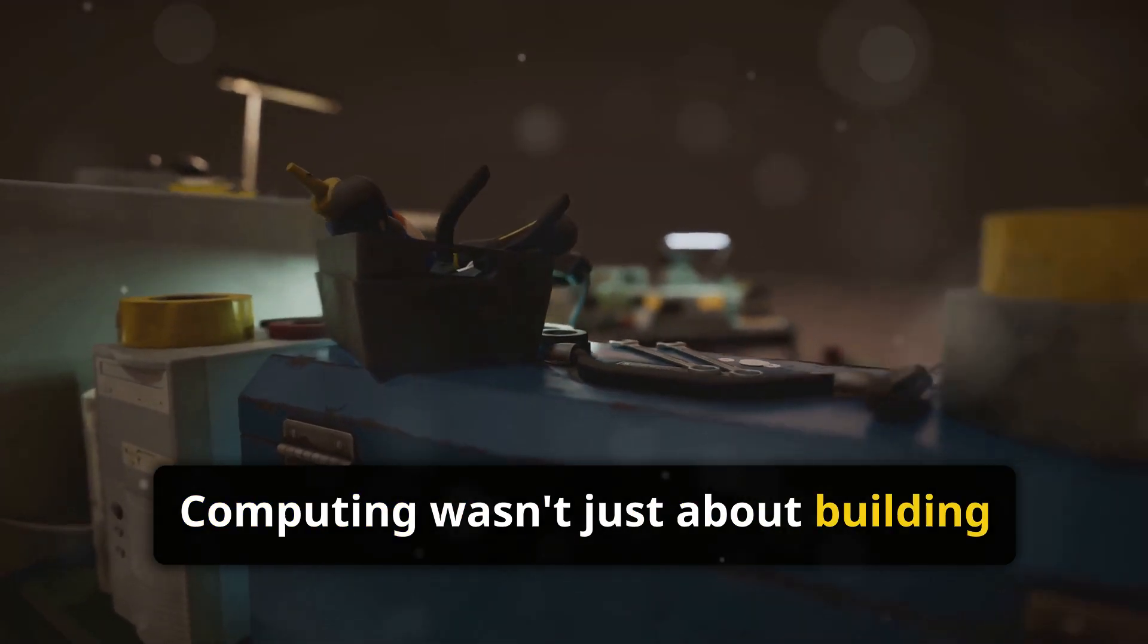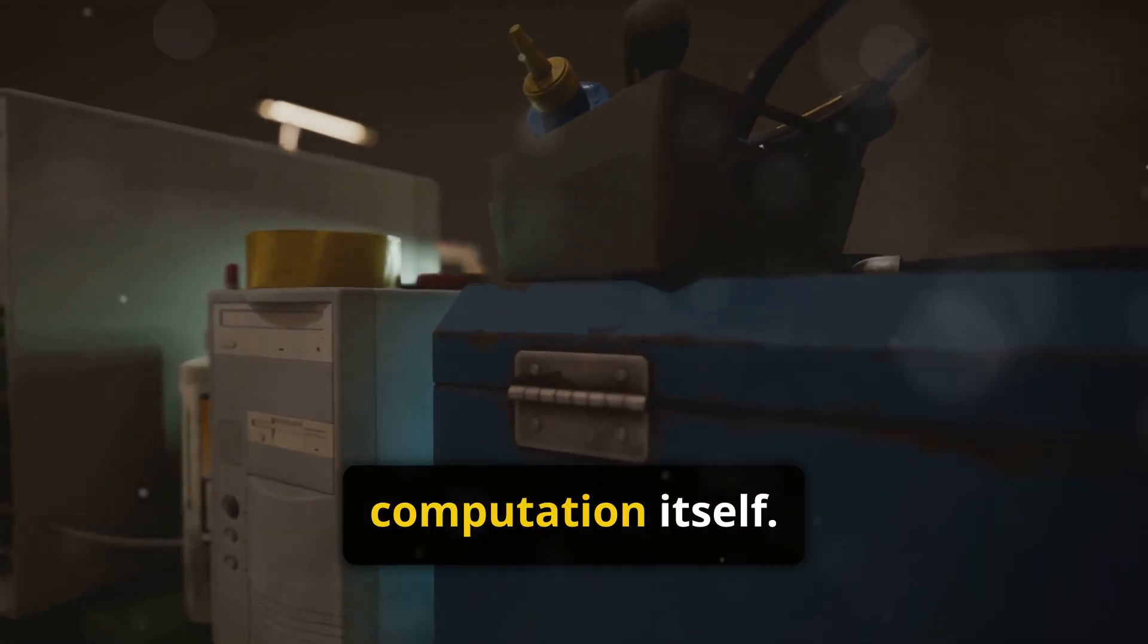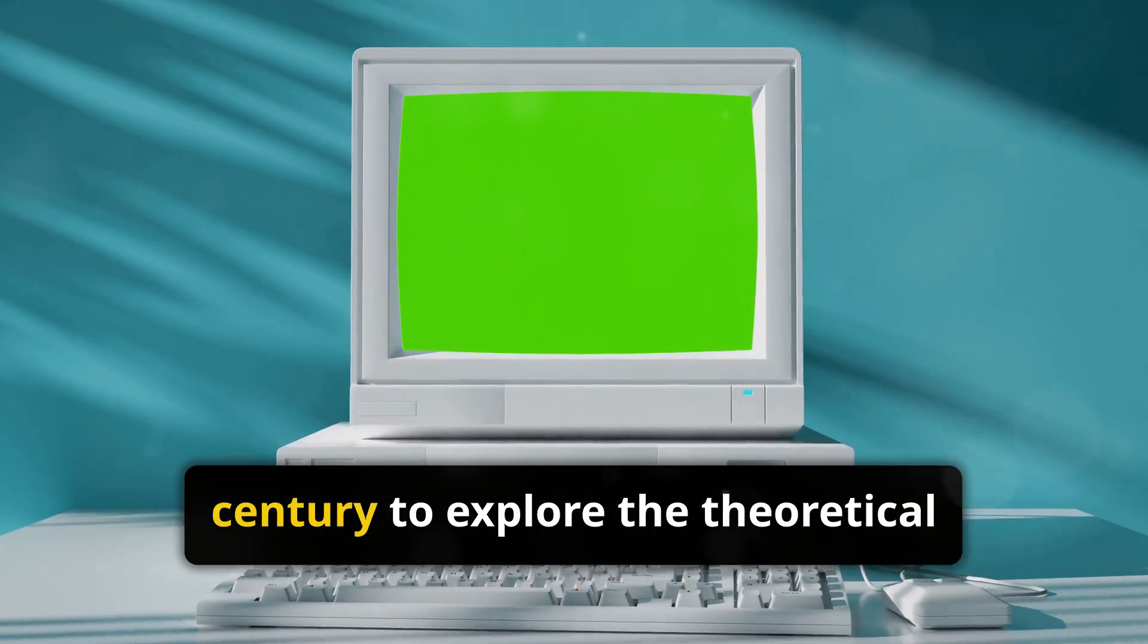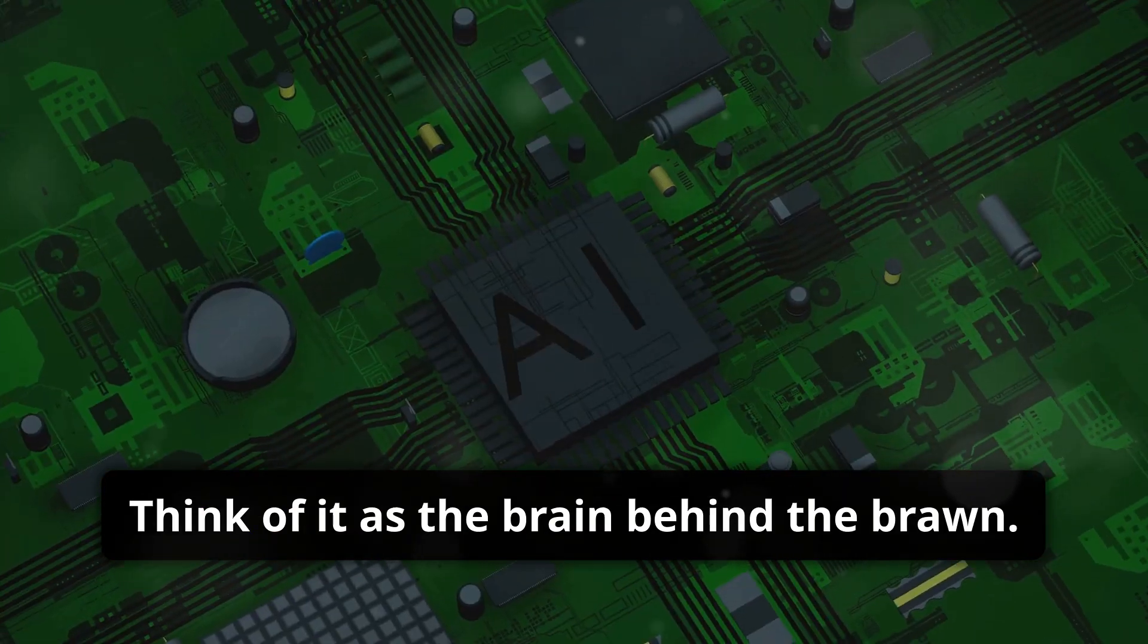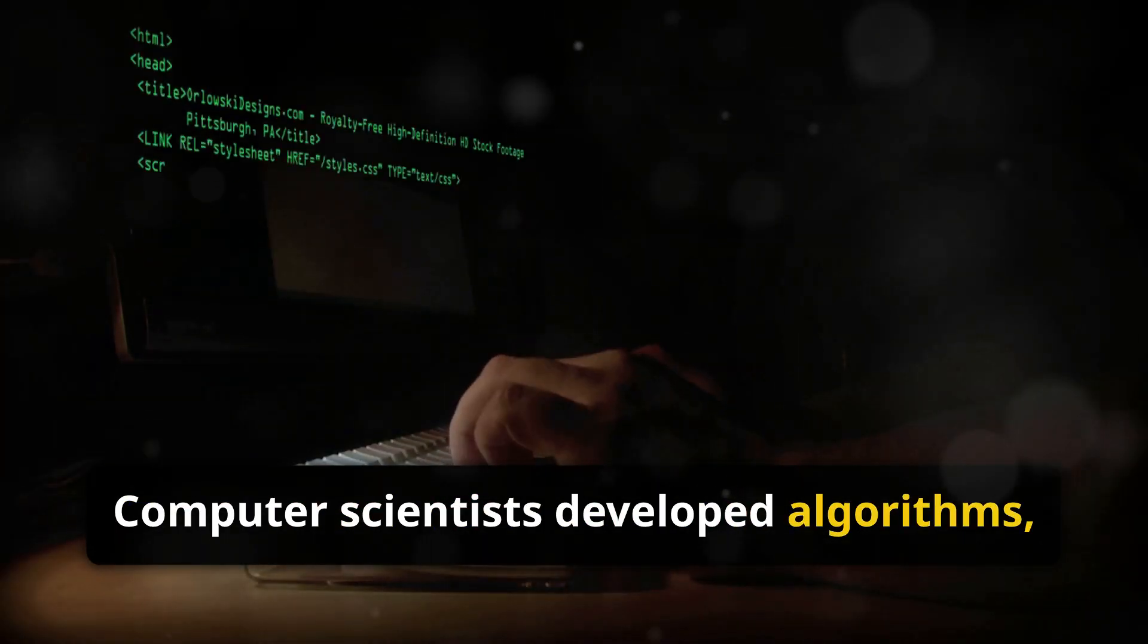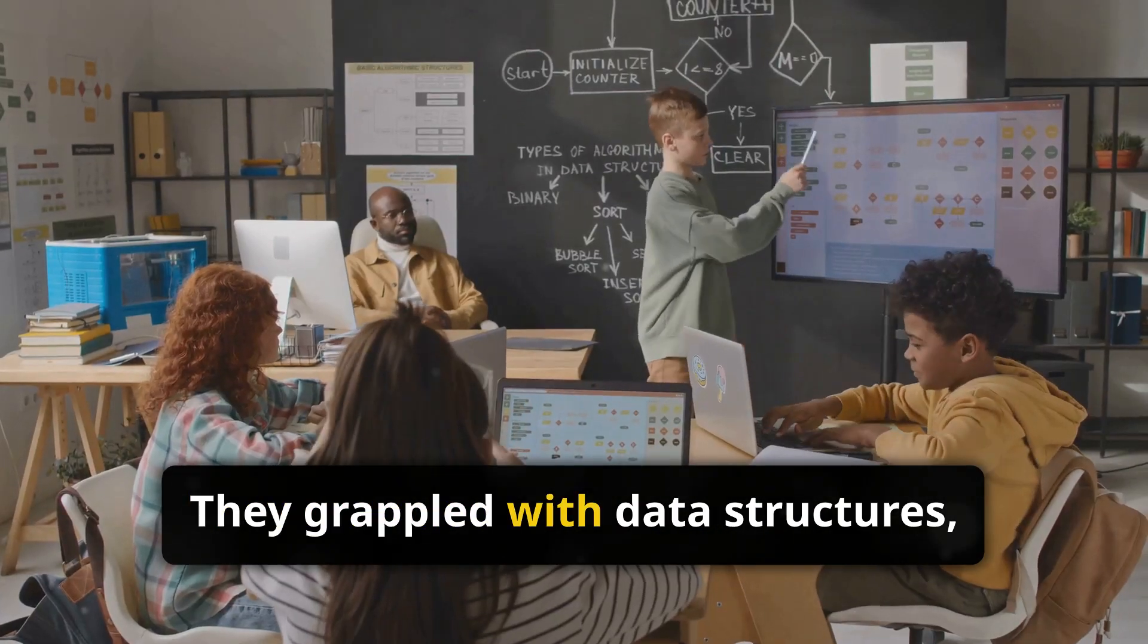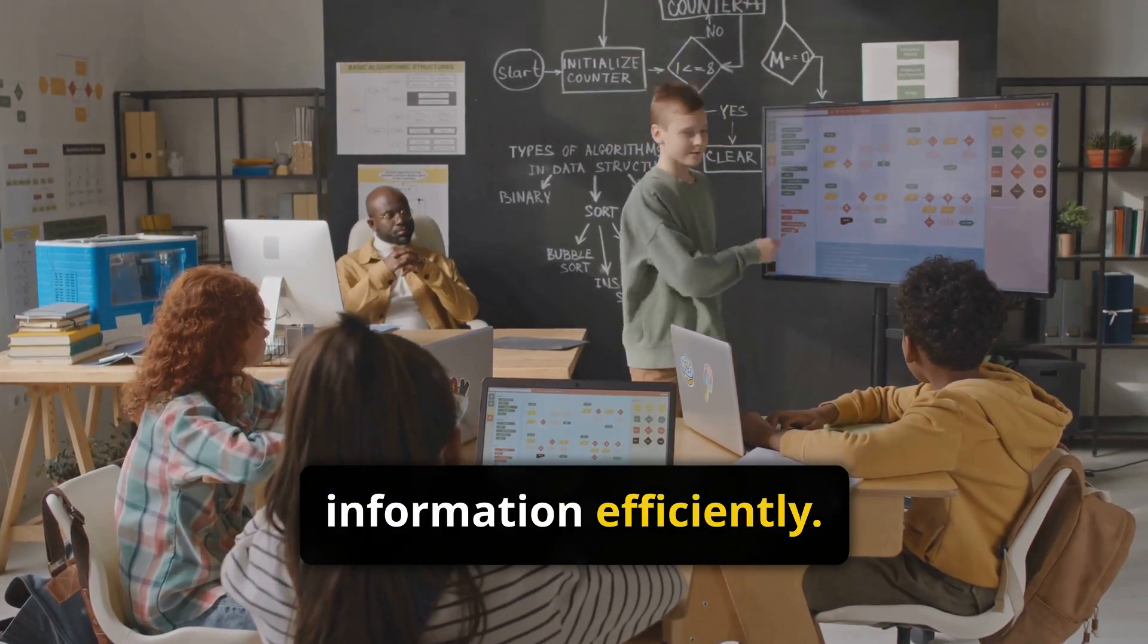Computing wasn't just about building faster machines, it was about understanding the very nature of computation itself. Enter computer science, a field that emerged in the mid-20th century to explore the theoretical foundations of computing. Think of it as the brain behind the brawn. Computer scientists developed algorithms, those magical sets of instructions that tell computers what to do. They grappled with data structures, figuring out how to organize and store information efficiently.